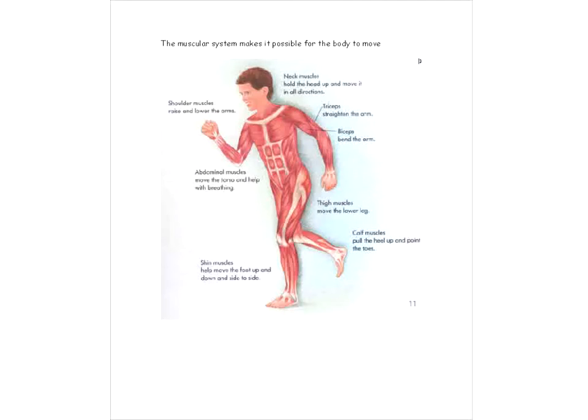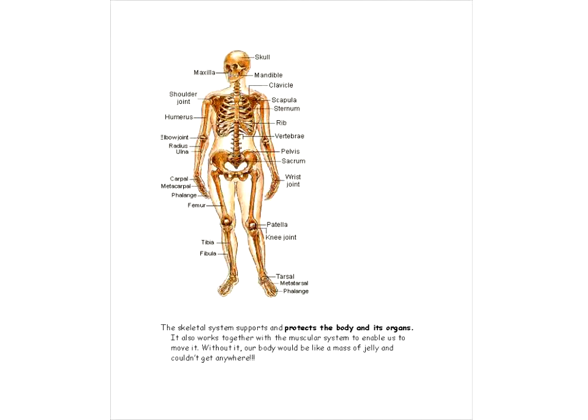So, how about the muscular system now? Okay, it makes it possible for the body to move. You can see how all these different muscles, what they're doing, the different types of movements they enable us to do. Alright, skeletal system. The skeletal system supports and protects the body and its organs. It also works together with the muscular system to enable us to move. Of course, without the skeletal system, if we only had the muscular system, our body would be like a mass of jelly, and we couldn't move anywhere at all.